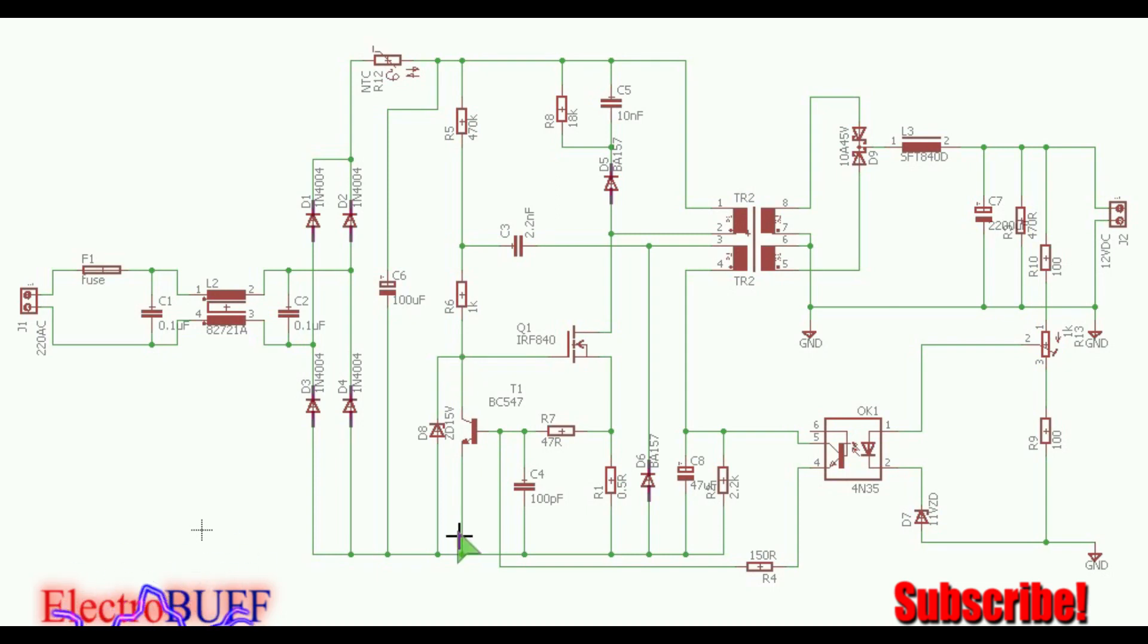So when this happens, all the energy stored in the core of the transformer will be transferred to the secondary side. Also, what happens is that when the current is ramping up in the primary because the MOSFET switches on, there's this feedback section here made up of this capacitor.